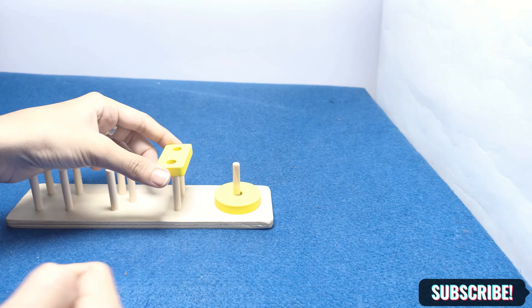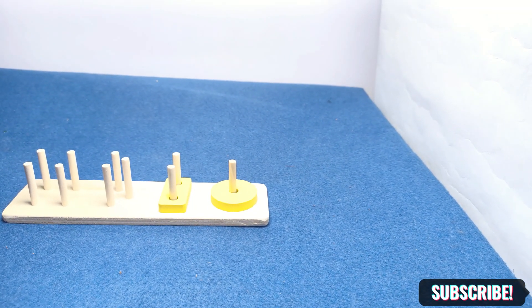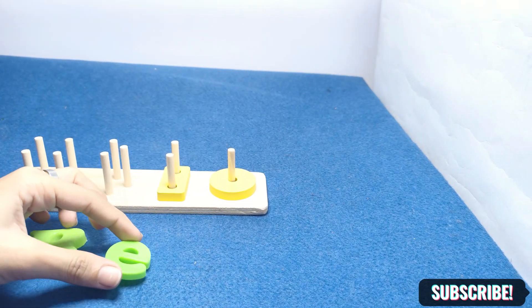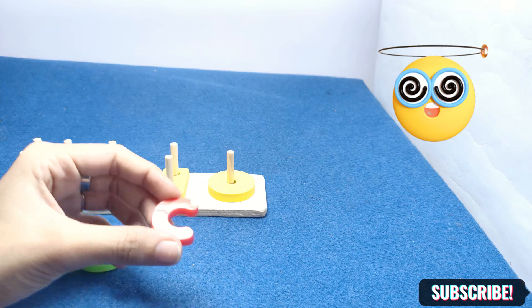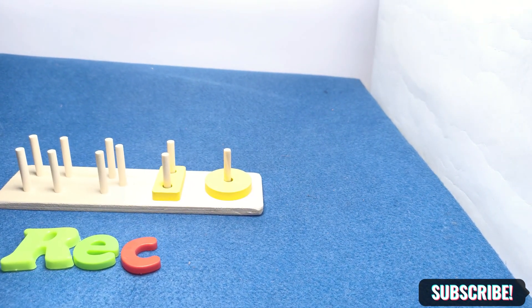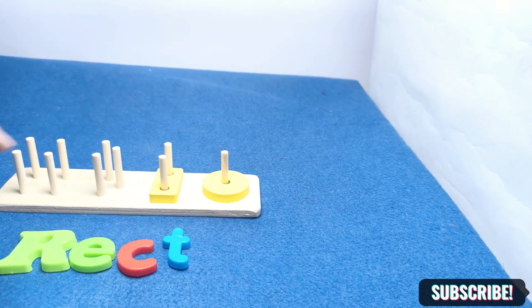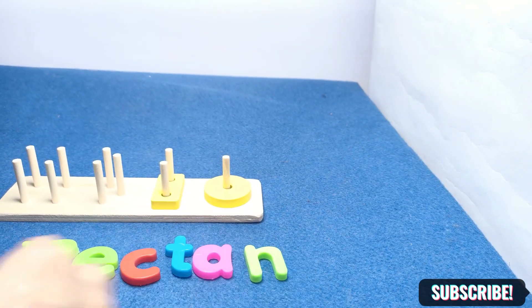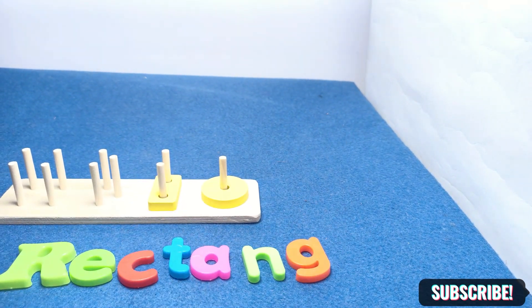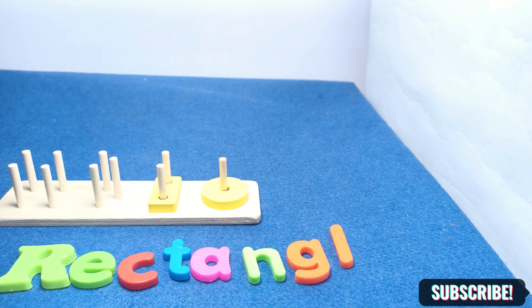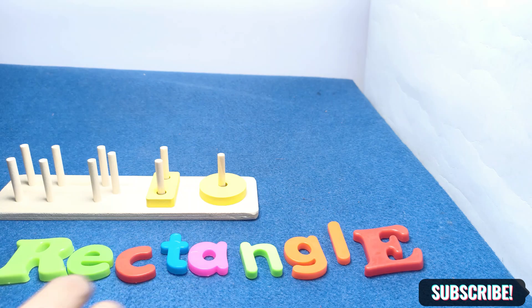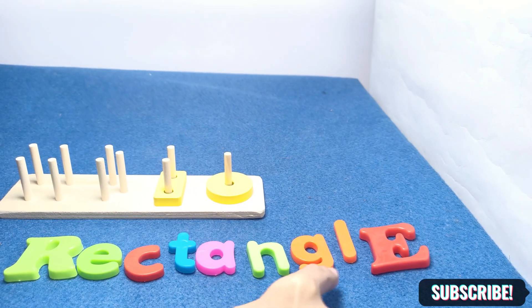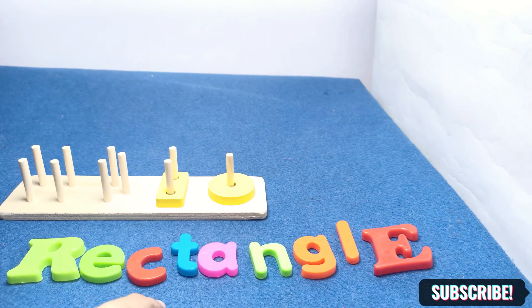Yellow rectangle, put it in. Now learn the spelling of the rectangle: R-E-C-T-A-N-G-L-E. It's rectangle. Rect-angle. It's rectangle.